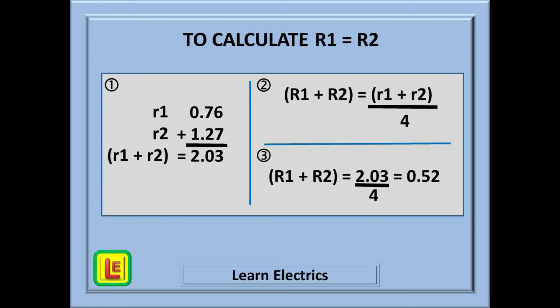This is an effect of parallel conductor paths. So in our case we have 2.03 divided by 4. Our answer is 0.52 ohms, and this is your big R1 R2. Save this number for later comparison when testing.